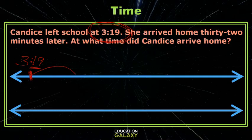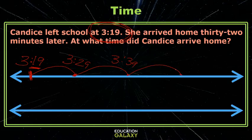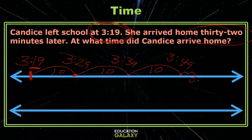If we go forward 10 minutes, then it's 3:29. If I go another 10 minutes, then it's 3:39. If I go another 10 minutes, then it's 3:49. So now I've jumped 10, 20, 30. Of my 32, I only have 2 left. So I count 1, 2, which will be 3:50 and then 3:51.